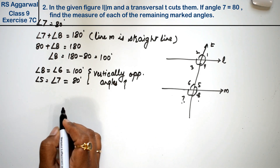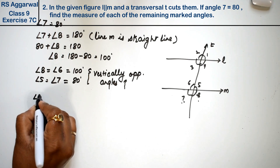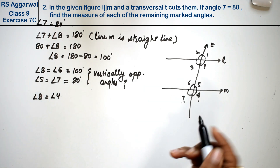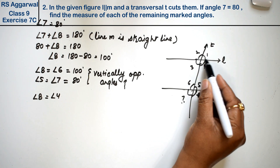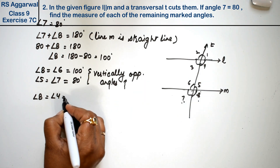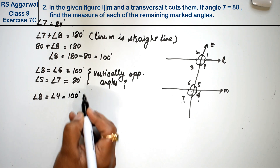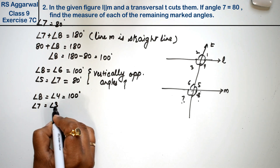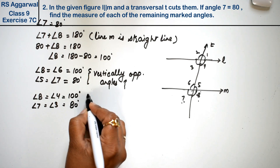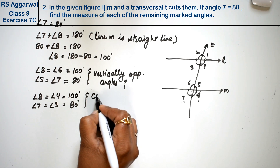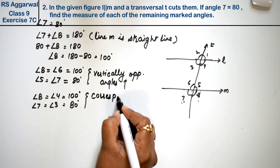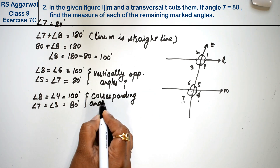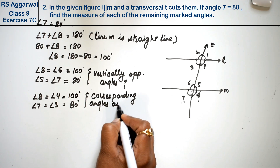Now, angle 8 is also equal to angle 4. These are parallel lines, so corresponding angles are equal. Angle 3 is also 80 degrees by corresponding angles.